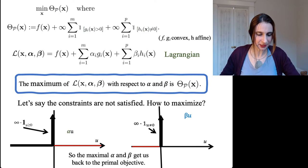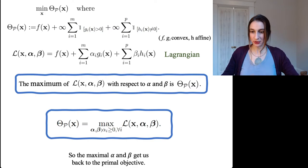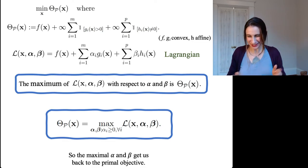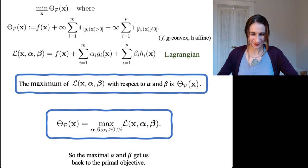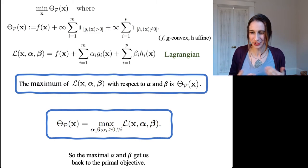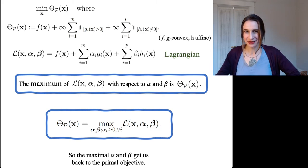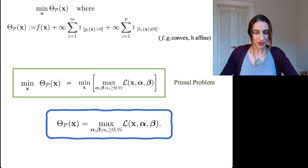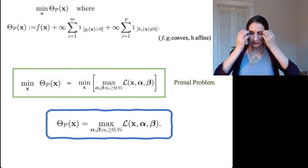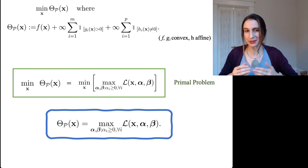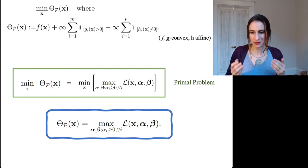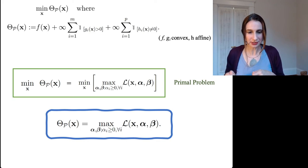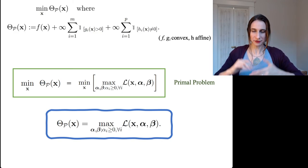So the maximum of the Lagrangian with respect to alpha and beta gets us back to the primal objective, whether the constraints are violated or not. I can now write that the primal objective equals the maximum of the Lagrangian with respect to alpha and beta — keeping in mind that alpha must be greater than or equal to zero, otherwise the Lagrangian is no longer a lower bound. So the primal problem — minimize f of x subject to constraints — is the same as minimizing over x the maximum over alpha and beta of the Lagrangian.